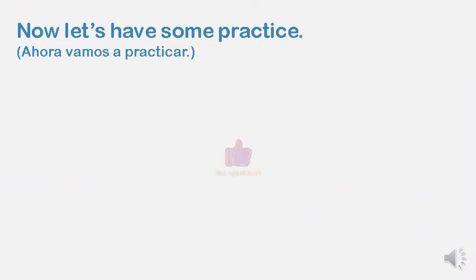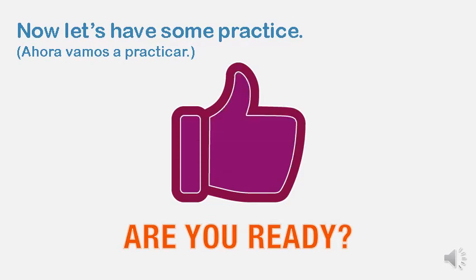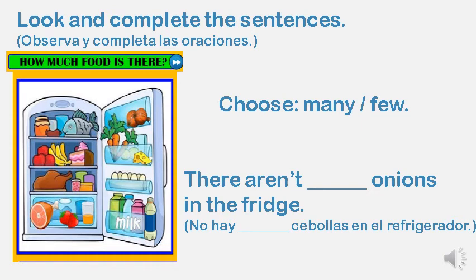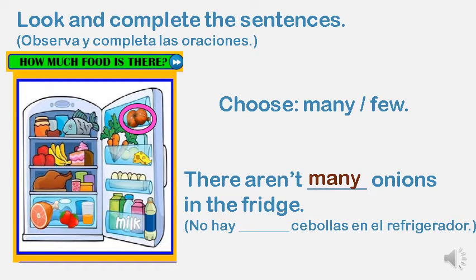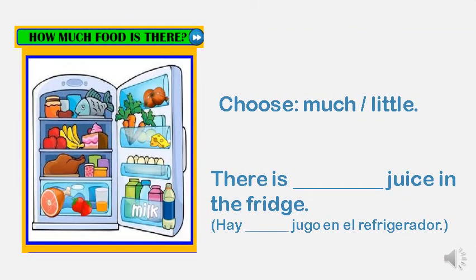Let's have some practice. Are you ready? Look and complete the sentences. Choose many or few. There aren't many onions in the fridge. That is correct — many. There aren't many onions in the fridge. Choose much or little. There is little juice in the fridge. Very good — there is little juice in the fridge.